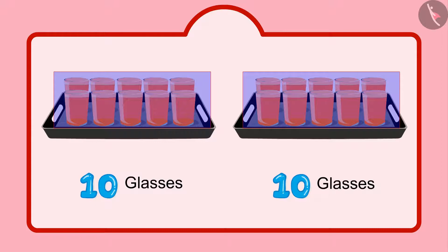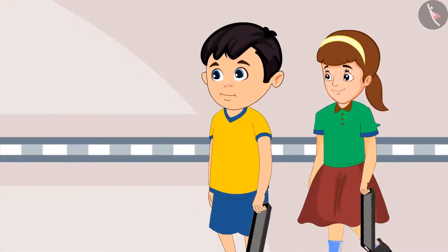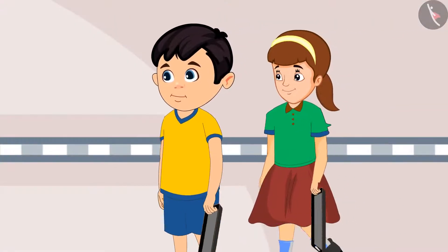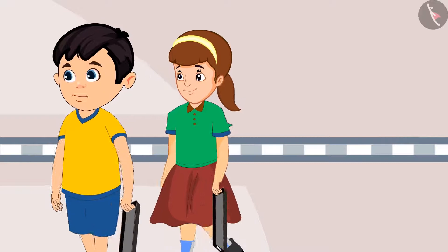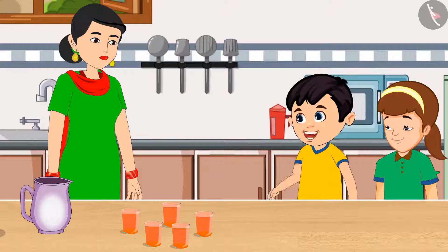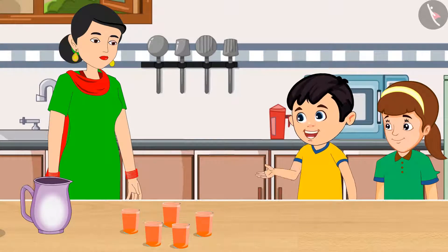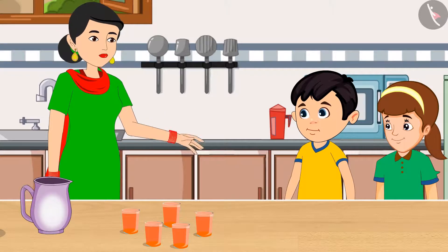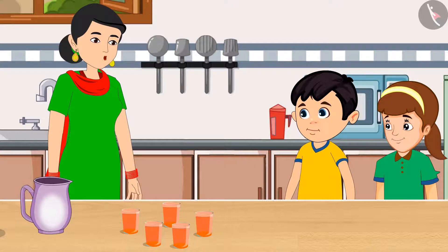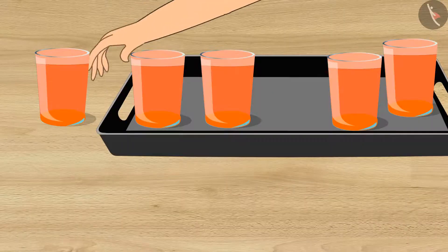It means two tens. This means Chotu has 20 glasses of sherbet. Together, Chotu and our team distributed all the glasses filled with sherbet, but they need more sherbet now. Mommy, give us some more glasses of sherbet. Okay, Chotu, here you go. I have made some more sherbet. Keep it in this plate and take it outside. Yes, mommy.